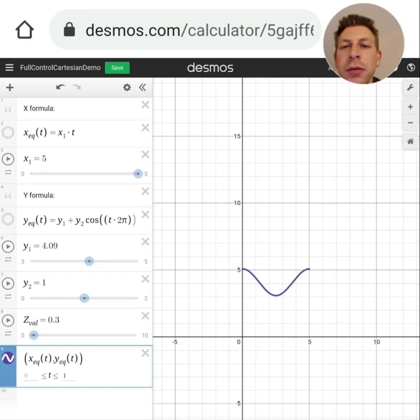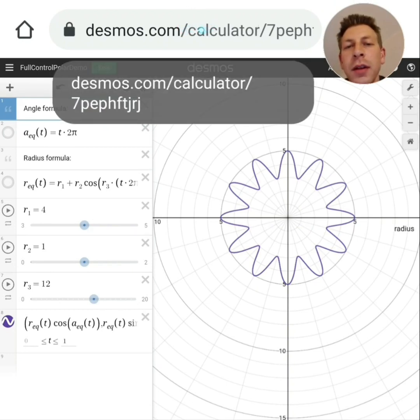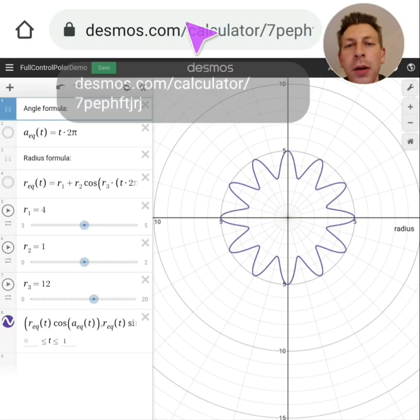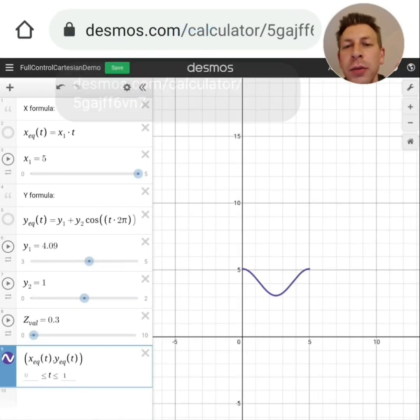So I've created two Desmos sets of equations. On the left here you can see all the equations that I've programmed. Basically the first one is for Cartesian coordinates and the other one is for polar coordinates. You can get them by just going to that URL that you can see on screen now for polar coordinates and this URL for Cartesian coordinates.